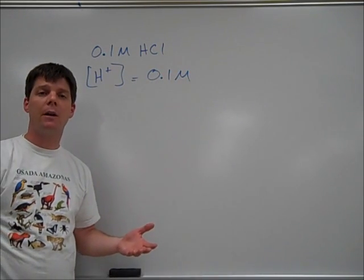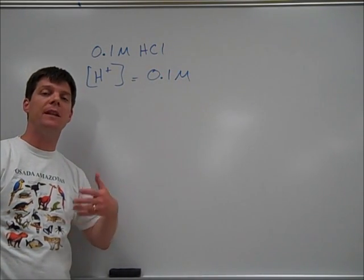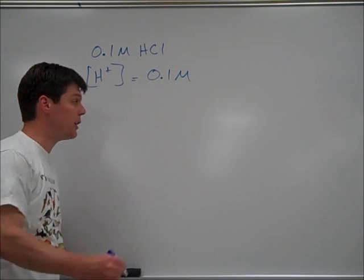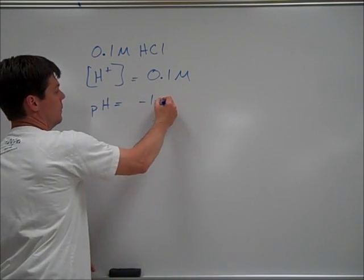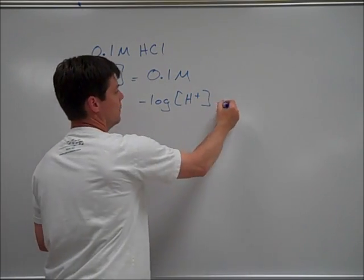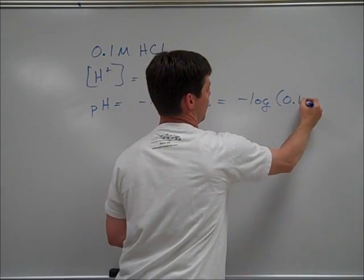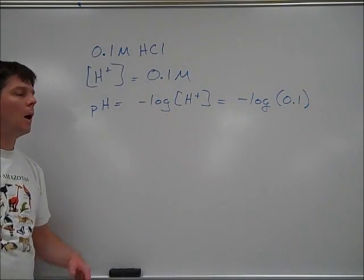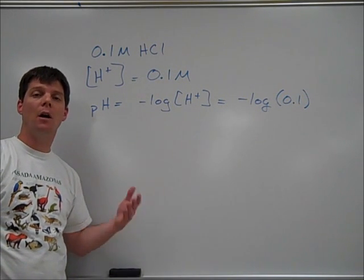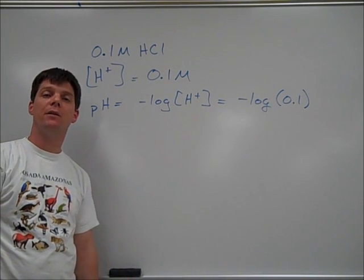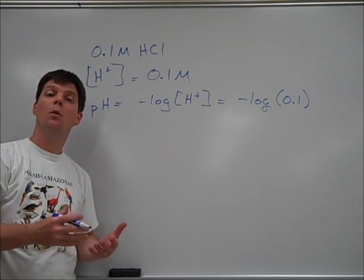In order to calculate the pH from this, we need to take the negative log of the hydrogen ion concentration. When we take the negative log of 0.1, we'll find that there is a pH here of 1.